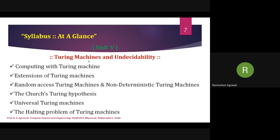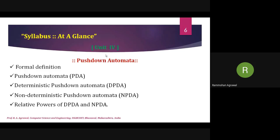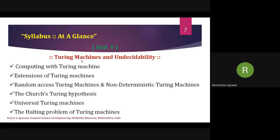In the last unit, Unit 5, we will study the Turing machine — what it is, where we apply it, what its powers are, and why the Turing machine is used for performing maximum computation. There are three types of machines: FSM in Unit 1, PDA in Unit 4, and Turing machine in Unit 5. Turing machines are the most powerful among the three and are used as the industry implementation for performing any given task.